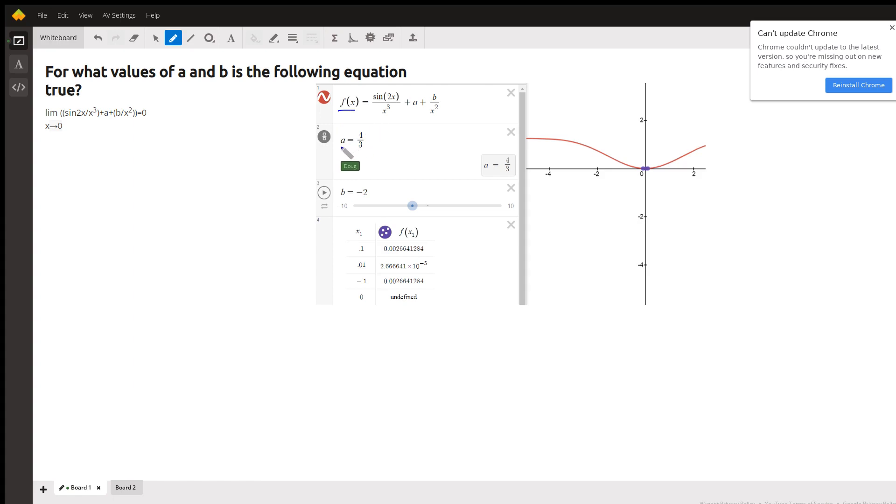I've set the values of a and b to 4/3 and -2 respectively. This table seems to indicate that those values work - that this function equals zero or approaches zero with these values of a and b. The graph kind of indicates that too.